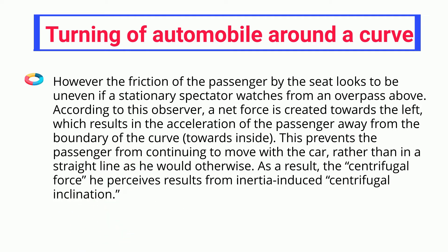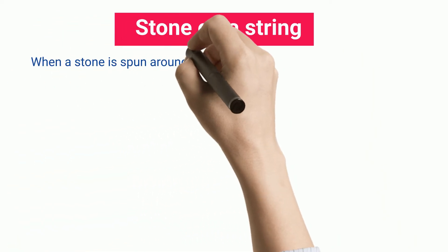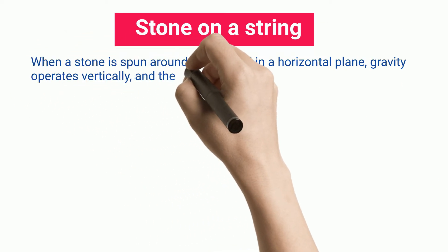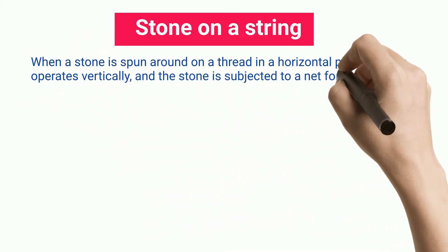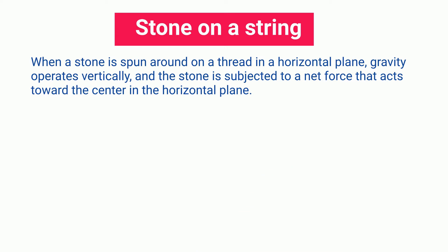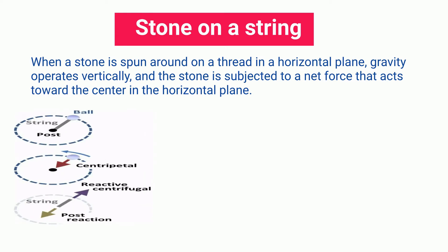As a result, the centrifugal force the passenger perceives results from inertia-induced centrifugal inclination. When a stone is spun around on a thread in a horizontal plane, gravity operates vertically and the stone is subjected to a net force that acts toward the center in the horizontal plane.